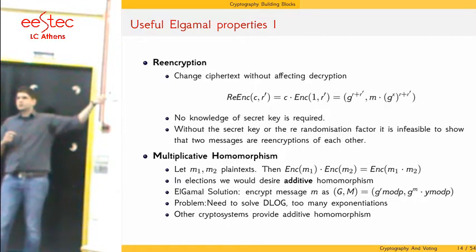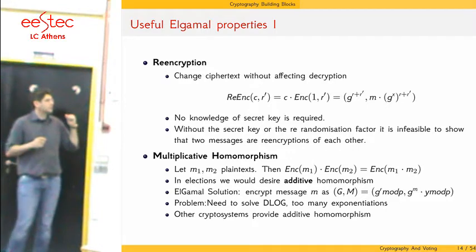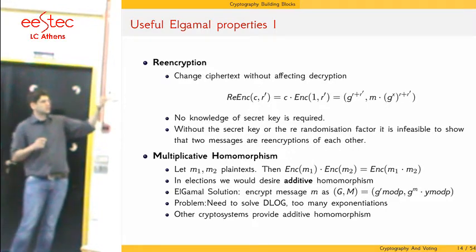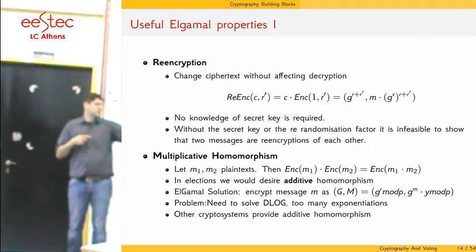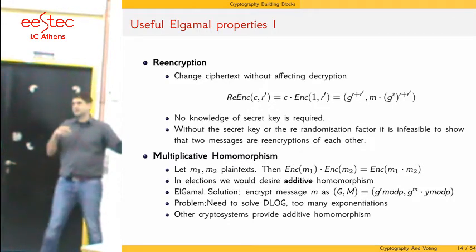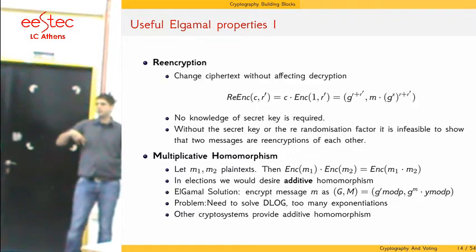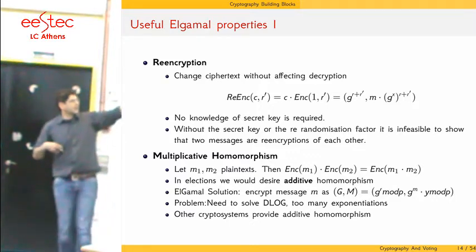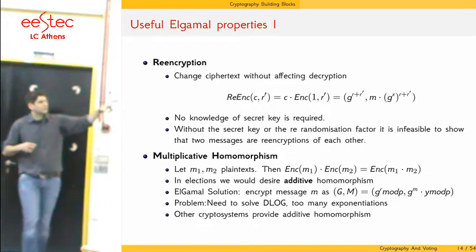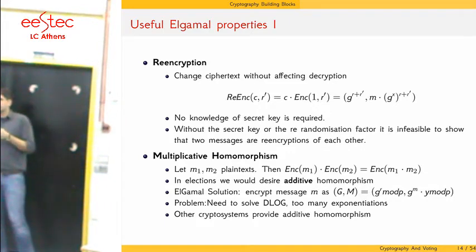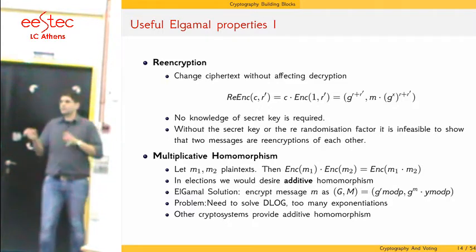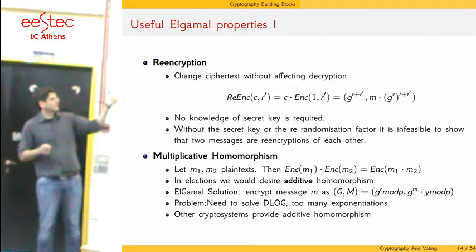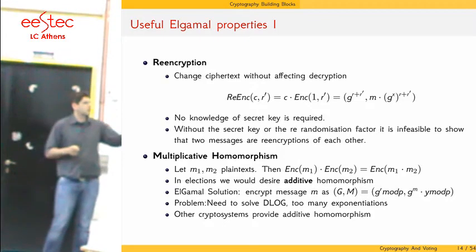In the election system we require additive homomorphism. In ElGamal, instead of encrypting the message directly, we can raise the generator to the power of the message — encoding it as g^m — and apply additive homomorphism. However, to decrypt we would need to solve the discrete logarithm problem, which is hard. So this is not widely used; to have pure additive homomorphism, other cryptosystems may be required.